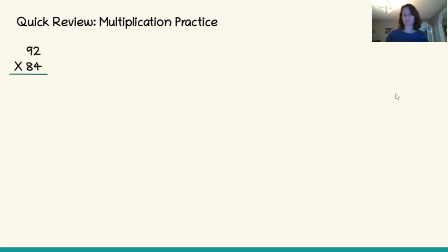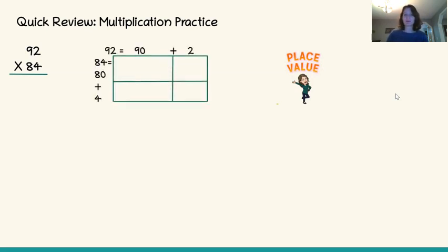What methods do we know? Let's look at 92 times 84 as an example. One of the methods we have learned is the place value sections method. So if we were doing 92 times 84, we would draw the rectangles to fit this. We would split 92 into 90 plus 2, and 84 into 80 plus 4, and then fill the rectangles with the appropriate equation.